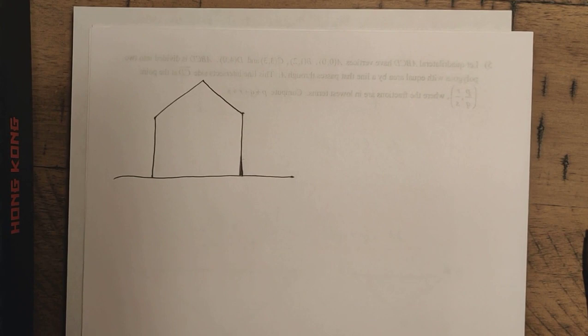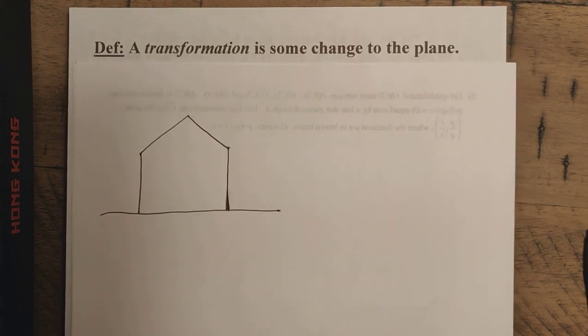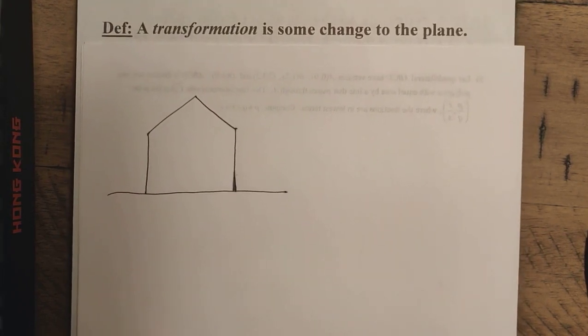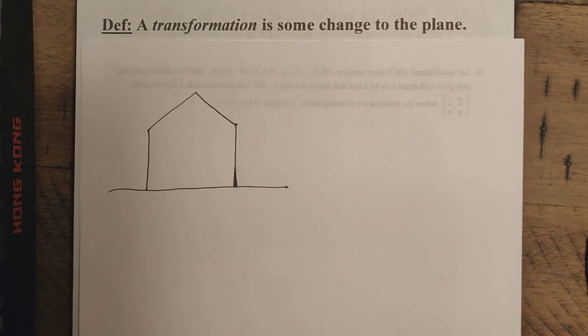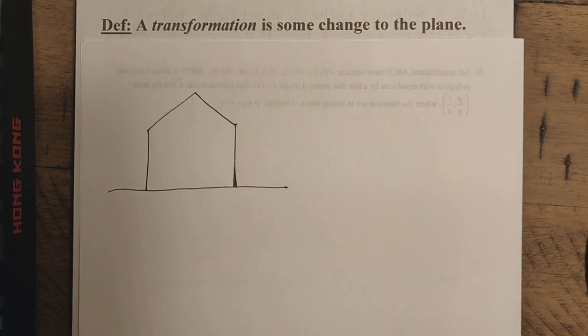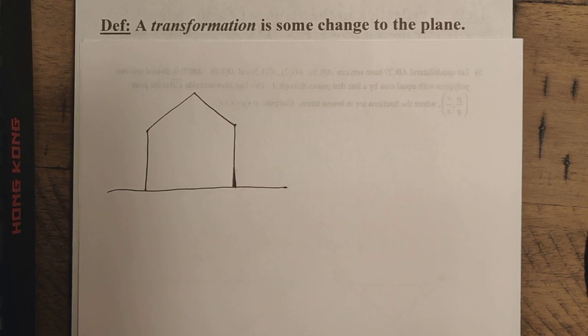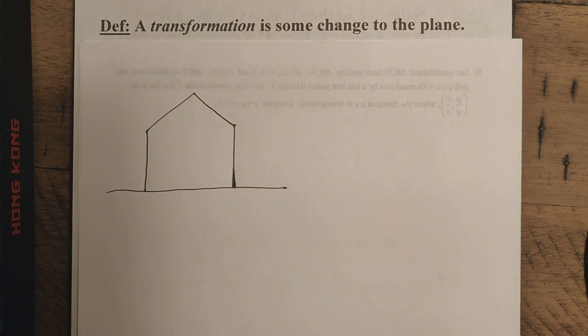So at its core, if you think about a transformation, a transformation really is just some change to the plane here. Now the change we're going to be looking at can be whatever you want here. It could be some sort of stretching, it could be shrinking, it could be a movement, it could be a change in orientations, or even a zero change. The idea is that it's just going to be some change to the plane, and we're going to be looking at it both algebraically and also geometrically here.